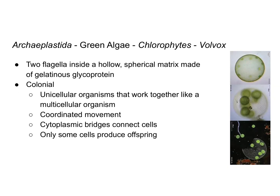The volvox protist has two flagella inside a hollow spherical matrix made of gelatinous glycoprotein, which you can see in this image with smaller organisms inside. These are unicellular organisms, but they are colonial, meaning they work together via cytoplasmic bridges that physically connect cells. The colony moves as a single organism, coordinating movement together, and only some cells in the colony produce offspring — a little bit of specialization. However, this does not make it a multicellular organism, because these cells are able to live independently of each other. In a true multicellular organism, if you removed a single cell, it would not be able to survive on its own.